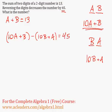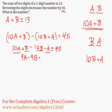Now let's just simplify everything over here. 10A plus B minus 10B minus A equals 45. 10A minus A is 9A, B minus 10B is negative 9B equals 45.